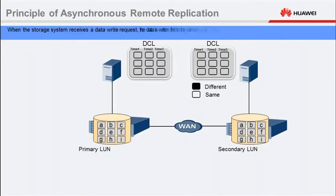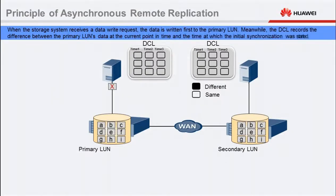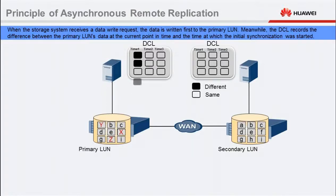When a storage system receives a data write request, the data is written first to the primary LUN. During this time, the secondary LUN is not writable by default. Meanwhile, the DCL records the difference between the primary LUN's data at the current point in time and the time at which the initial synchronization was started.